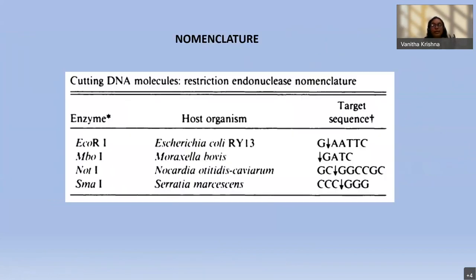How exactly are the names given to restriction endonucleases? Taking the most commonly used example, EcoRI: the first letter E is derived from the genus Escherichia, CO is the species name coli, R is for the strain, and the Roman numeral I distinguishes it from other enzymes isolated from that particular species. This is the nomenclature. Shown on the right is the target sequence — restriction endonucleases have a specific sequence on the DNA which they identify to cleave.